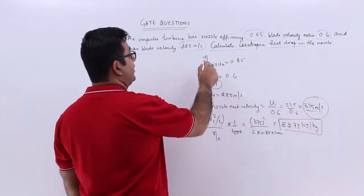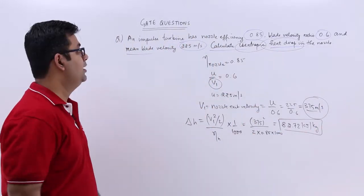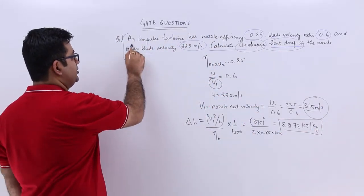So this is the isentropic heat drop in the nozzle. A very simple question on impulse turbines.